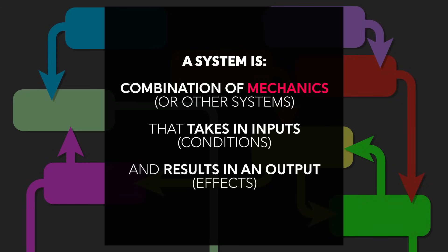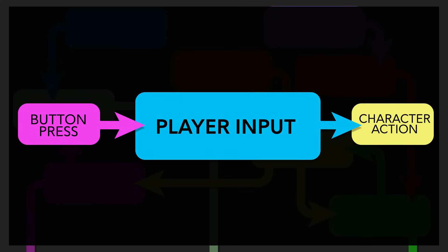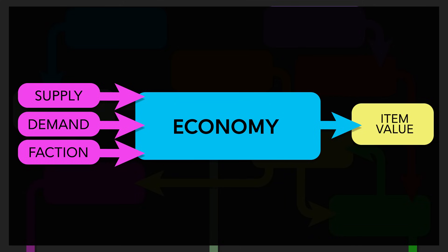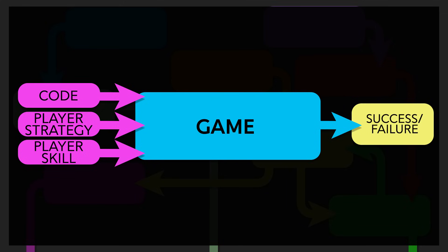This sounds generic, and it is. It can range from player input systems, where the input is a button press and the output is character action, to economies where inputs are supply, demand, and other considerations, and the output is a value placed on an item, to an entire game where the input is the player actions and the game code, and the output is success or failure.